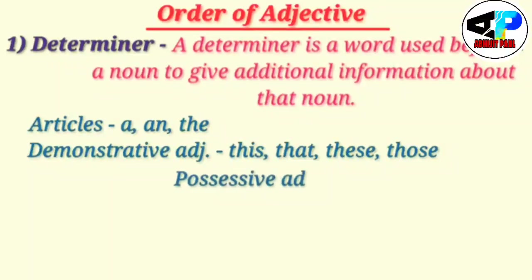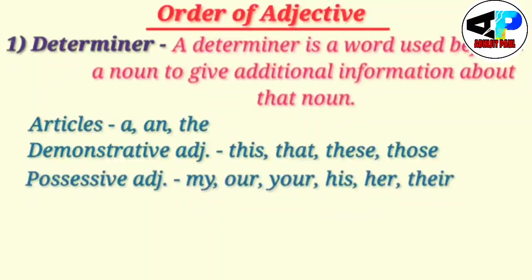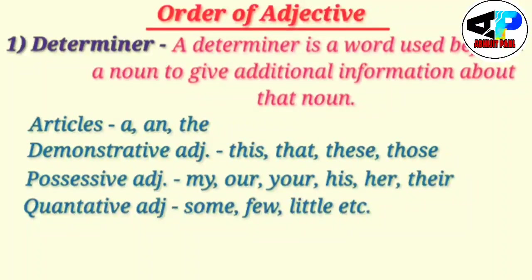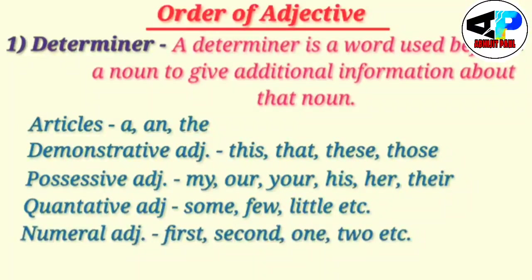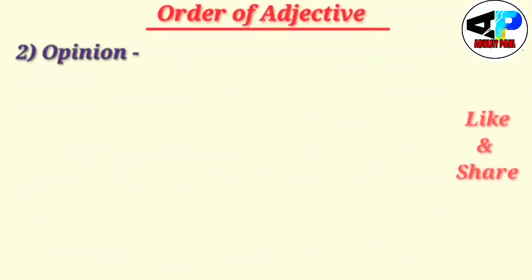Second, a determiner can be a demonstrative adjective: this, that, these, those. Third, a determiner can be a possessive adjective: my, our, your, his, her, their. Then there is quantitative adjective: some, few, little, etc. And numeral adjective: first, second, one, two, etc.